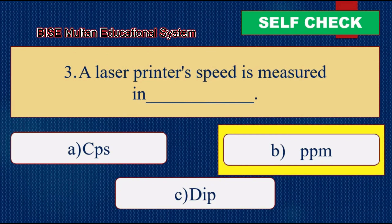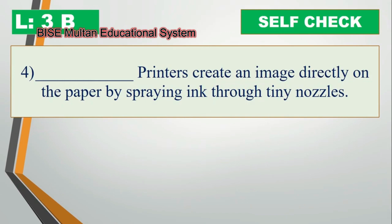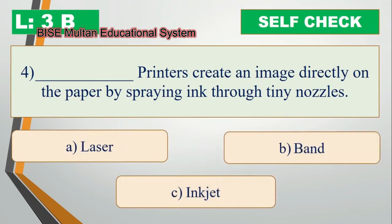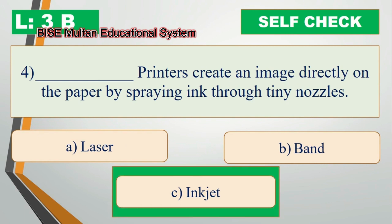Self-Check Question 4. Blank printers create an image directly on the paper by spraying ink through tiny nozzles. The answer is inkjet printer.